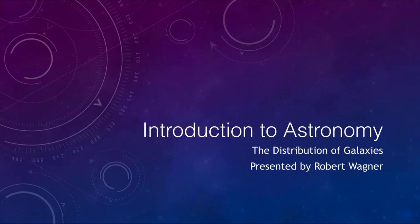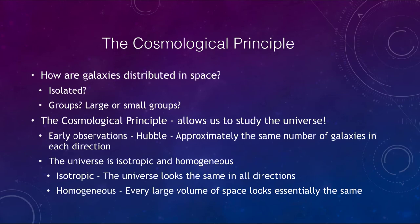Greetings and welcome to the introduction to astronomy. In this video we are going to talk about the distribution of galaxies — how they are organized out in space and how they tend to group together. We want to look at whether galaxies are isolated or in groups, and if they're in groups, whether those groups are large or small. This leads us to what we call the cosmological principle.